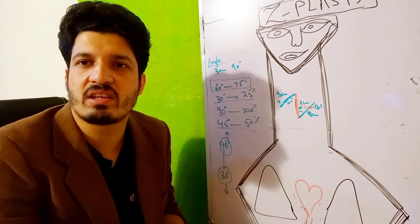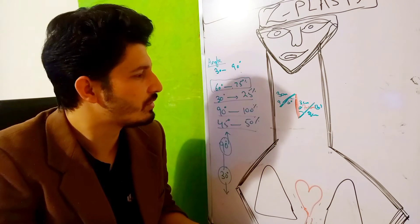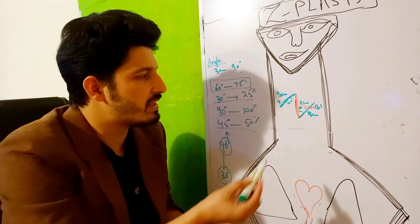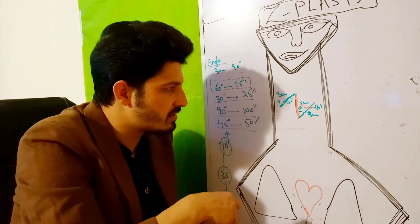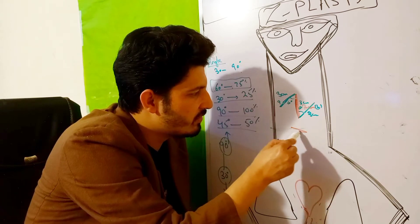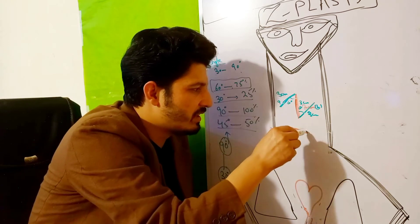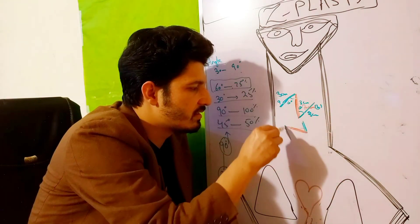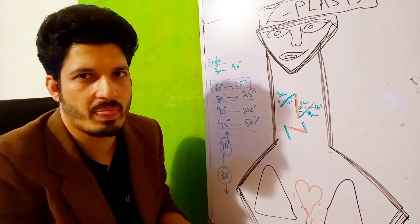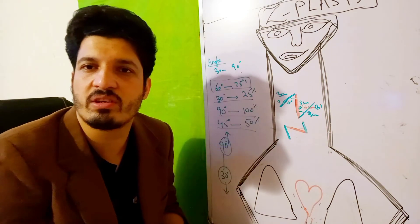So this was all about Z-plasty. After the transposition, it will move like this: this limb will become like this, and the other limbs will become like this. It will be tilted like this.